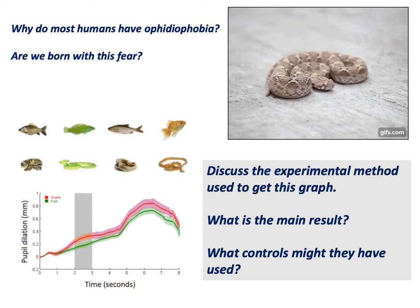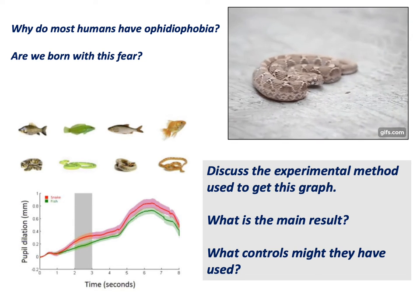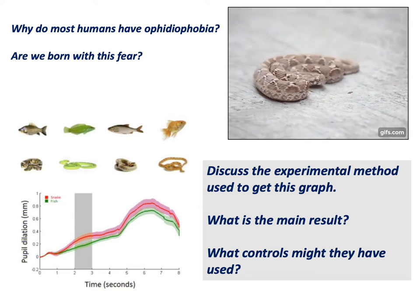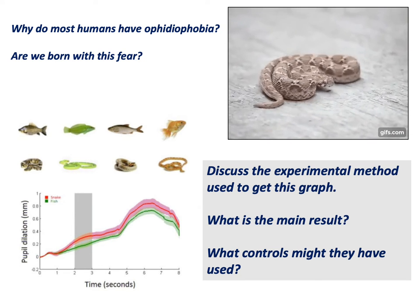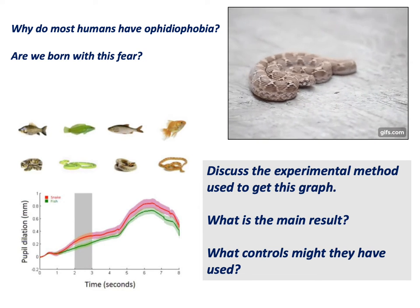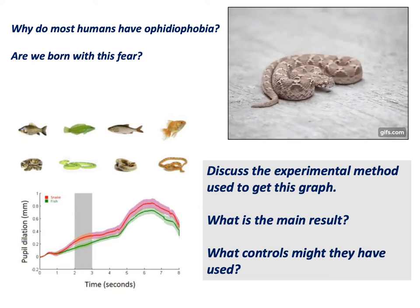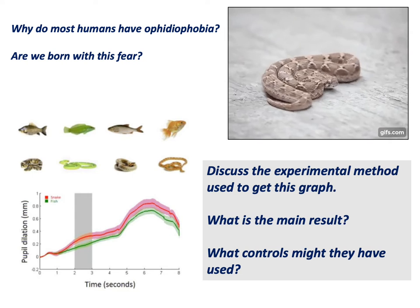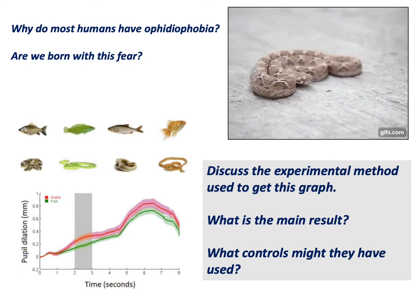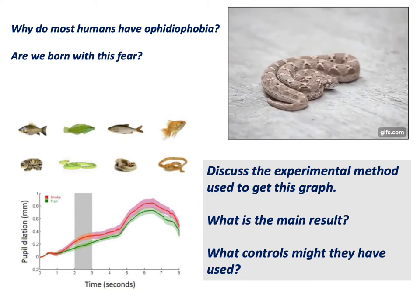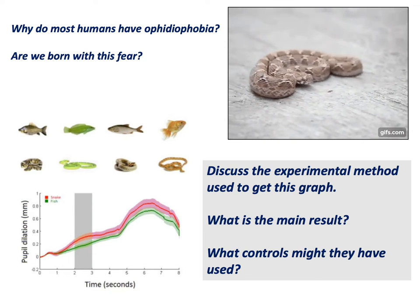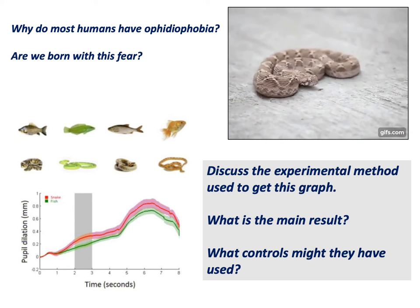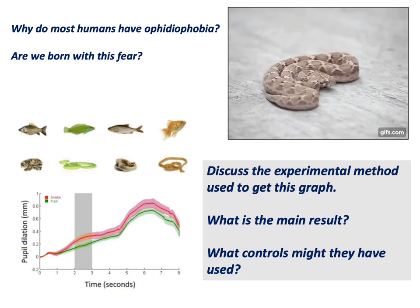So what was the main result of this study? You can see that the line for snakes in red shows that dilation of the pupils seems to happen faster following exposure to an image of a snake. What are some of the controls you would need to engage in this sort of zoological psychology experiment?